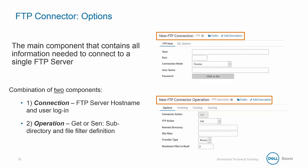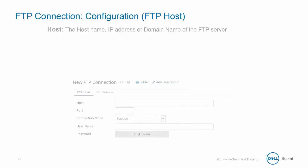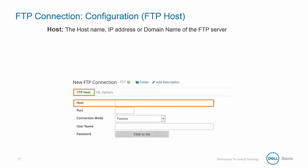The second is the operation, or the 'how,' which is a get or send action along with the subdirectory and file filter definition. In order to start, you will need to create a reusable FTP connection component. First we have the host, which is the hostname, IP address, or domain name of the FTP server — in our case it's ftp.boomi.com.